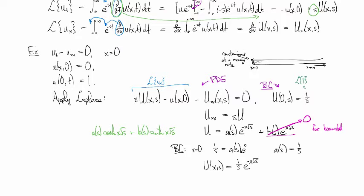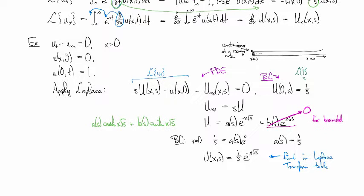Now we're ready to look at our handy dandy lookup table to see, so we want to find this in the table of Laplace transforms. And so when we do that, we see that the inverse Laplace transform, so somewhere in the right hand column, we find one over s e to the minus x root s.